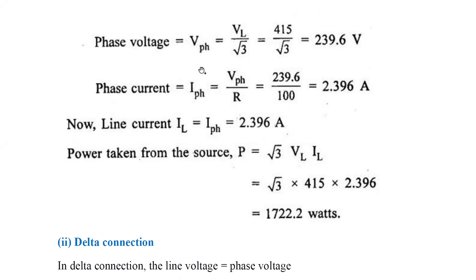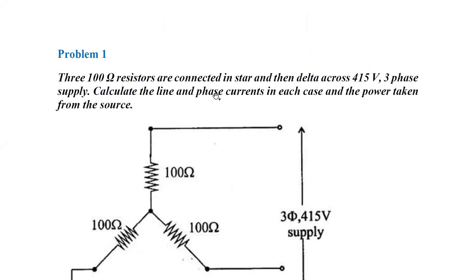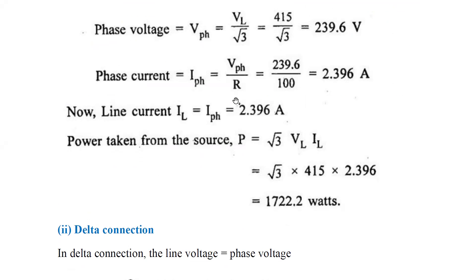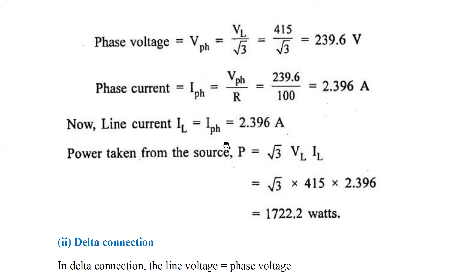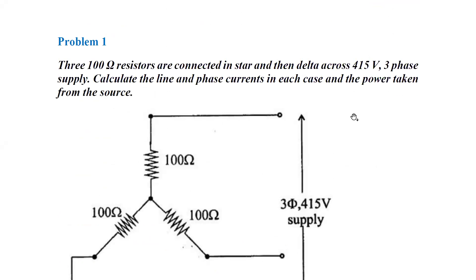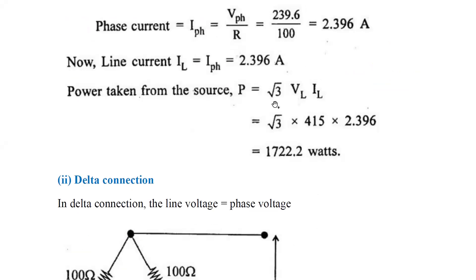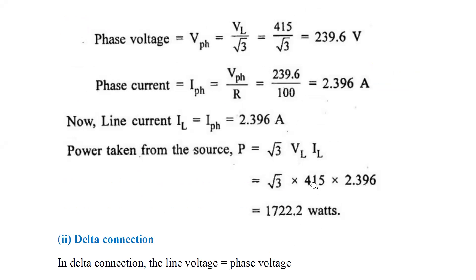Now we need to calculate power taken from the source. Power P is equal to root 3 times VL times IL. VL is 450 volts and IL is 2.396 amperes. Multiplying these gives a power of 1722.2 watts for the star connected circuit.